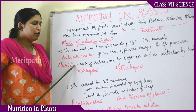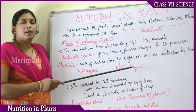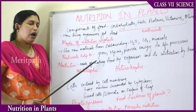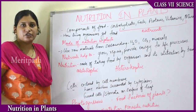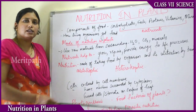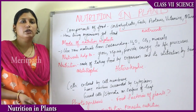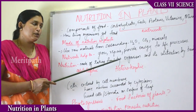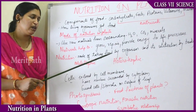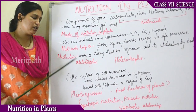Nutrition is the mode of taking food by an organism and its utilization by the body. Plants take food with the help of sunlight, water, and some nutrients, and utilize it for growth, reproduction, bearing fruits and seeds, and respiration. Nutrition is mainly of two types: autotrophic and heterotrophic.